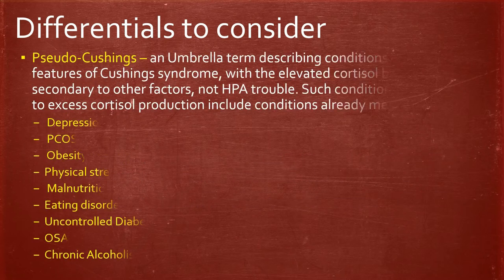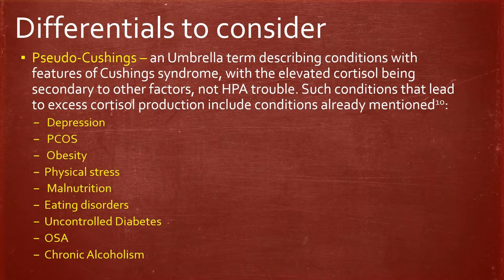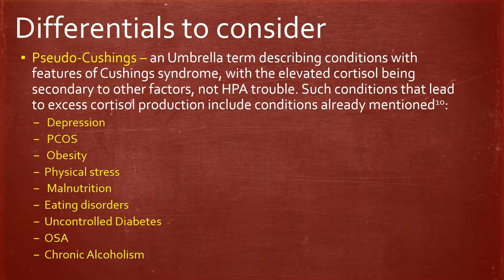Pseudo-Cushing's is an umbrella term describing conditions with features of Cushing's syndrome but with elevated cortisol due to factors other than problems with the HPA axis. Such conditions include depression, PCOS, obesity, physical stress, malnutrition, eating disorders, uncontrolled diabetes, obstructive sleep apnea, and chronic alcoholism — all of which cause an elevation in cortisol resembling Cushing's syndrome.